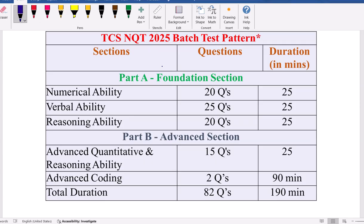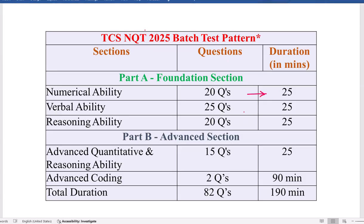Regarding the TCS NQT 2025 test pattern: in Numerical Ability there are 20 questions in 25 minutes, Verbal has 25 questions in 25 minutes, Reasoning has 20 questions in 25 minutes. Advanced Quant and Reasoning are now combined into 15 questions in 25 minutes. Advanced Coding was previously 2 questions in 55 minutes but is now 90 minutes. The total is 82 questions in 190 minutes.